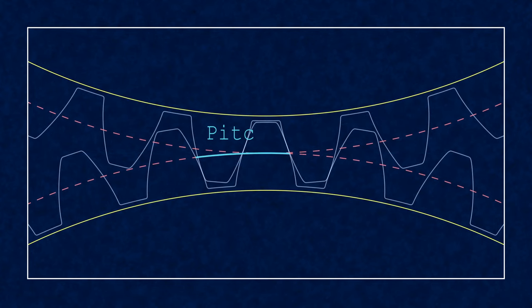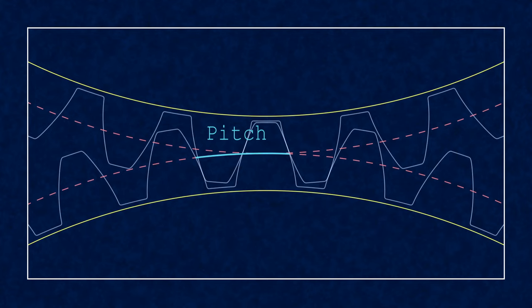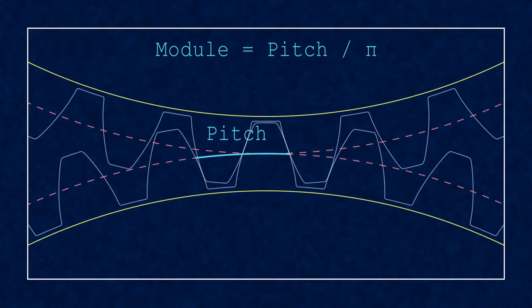The pitch is the arc length on the pitch circle between two teeth. The pitch defines the repeating pattern of the gear teeth. And then the module is the pitch divided by pi.